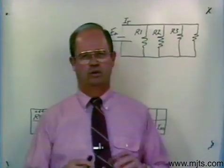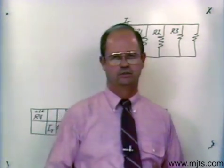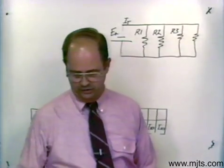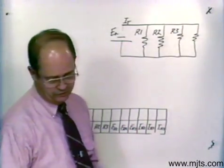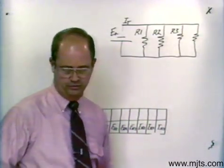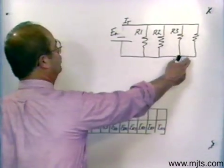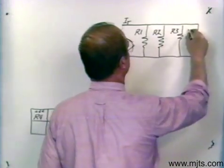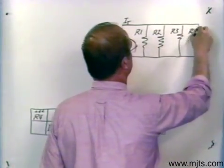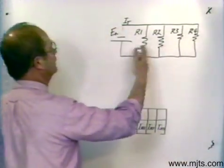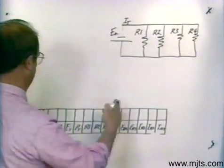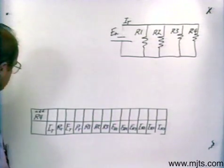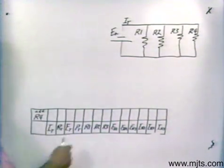Now let's take one more interrelationship analysis. I've taken number 3 from assignment sheet number 5, where we're going to add one more resistor — R4 — to that circuit. Let's see how this affects our parameters.